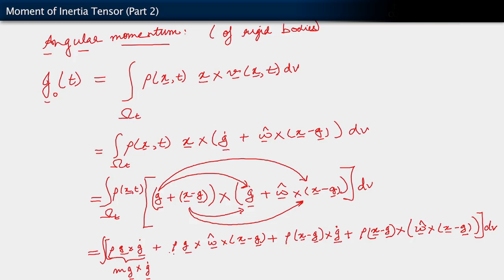What about the next term? Observe that the next term has these two factors which have spatial dependence. G is a function of time alone and ω̂, being the angular velocity, is also a function of time alone — not a function of position — because it's the angular velocity of a body that's rigidly moving. That term equals zero, because we have ρ times (x minus g) integrated over dV, and that we proved equals zero.